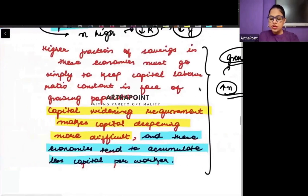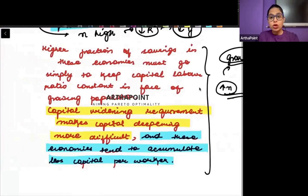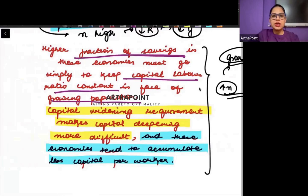Those economies which have growing populations, in order to keep small k constant, they would need higher savings. They need to increase their savings. Then they will be able to ensure that they still keep their growth constant.